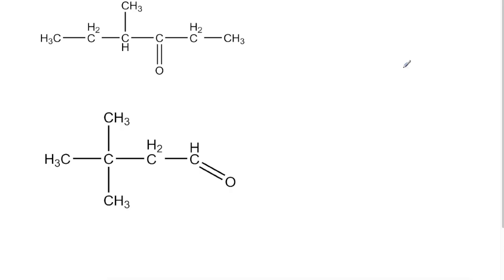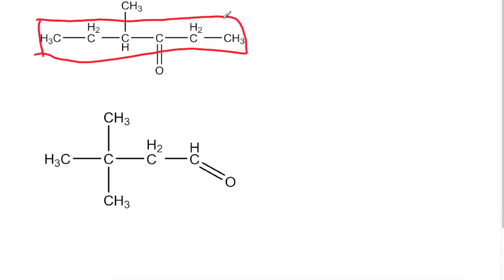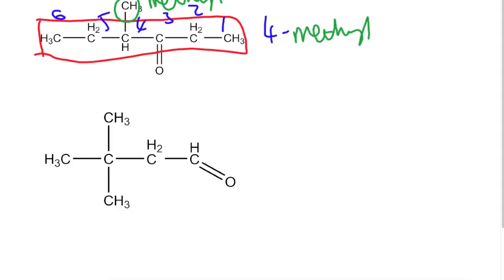Here are some examples for you to try yourselves — pause the video, see how you get on, and then restart. Looking at the first one, we're looking for the longest chain which contains our carbonyl group: one, two, three, four, five, six along the middle. We number the chain so that the carbonyl group ends up with the smallest possible number, so we're going to number from the right hand side. We've got one methyl branch on carbon four. We've got six carbons so it will be 'hexan'. Our carbonyl group is on number three, making it a ketone, so we end the name in 'one'. The name is 4-methylhexan-3-one.